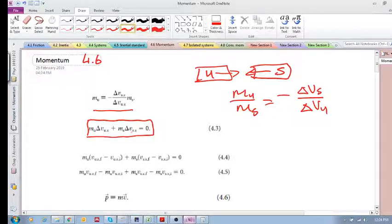If we rewrite it again, the delta v becomes v final of the unknown minus v initial of the unknown. Over here, we have v final of the standard minus v initial of the standard. Again, if we multiply out, we get these quantities mv, mv, mv, mv.